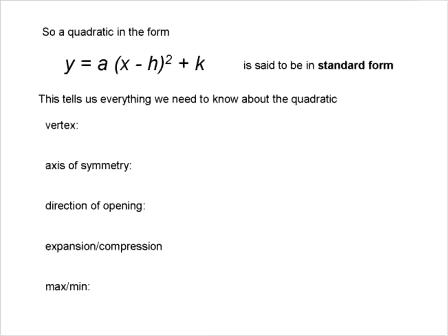The vertex is at (h, k). The axis of symmetry is x equals h, which is always the x-value of the vertex.